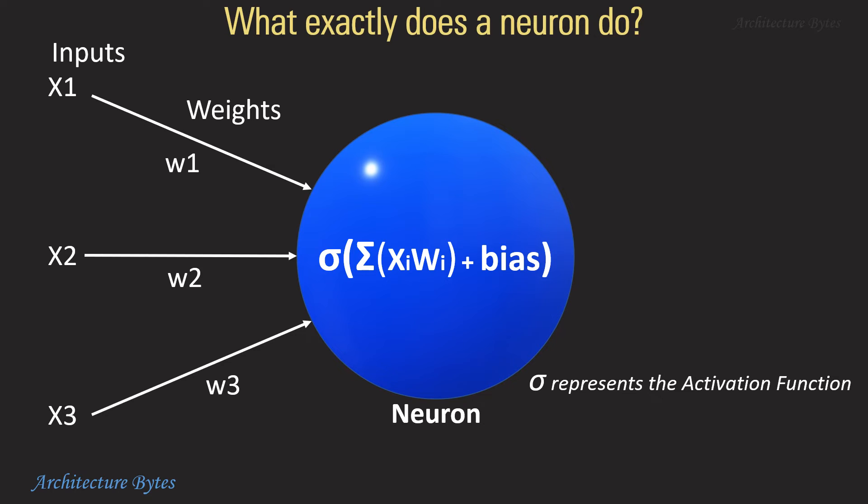And a bias is added to it. The result is then passed to an activation function which spits out the output for that neuron.